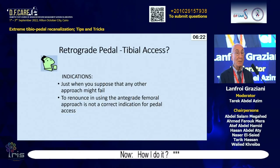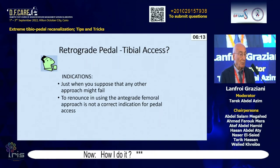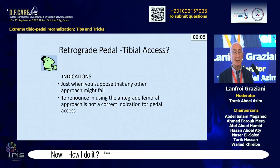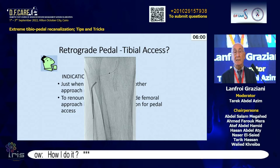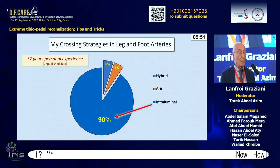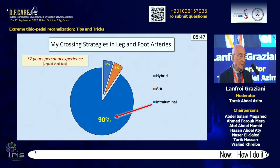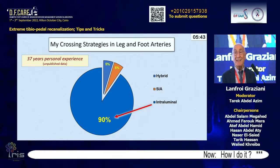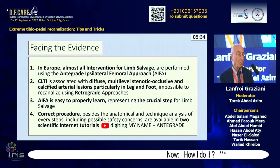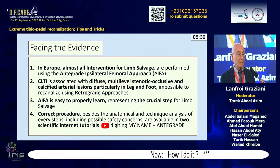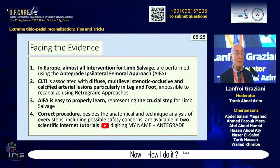Regarding retrograde tibial access: in my opinion, it is only justified when there is no other possibility. Abandoning the antegrade femoral approach is not the correct indication for tibial retrograde recanalization. This case represents about one to two percent of my routine. My crossing strategy over 37 years: intraluminal crossing in 90%, subintimal technique in 5%, and hybrid technique in 5%.